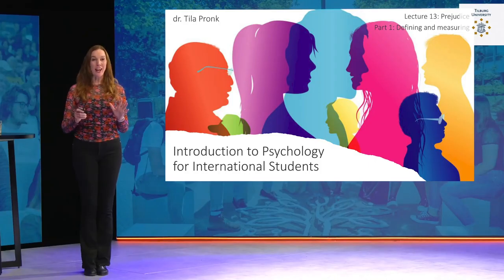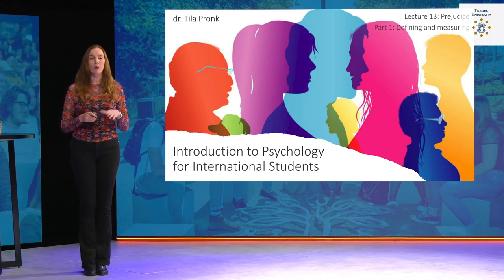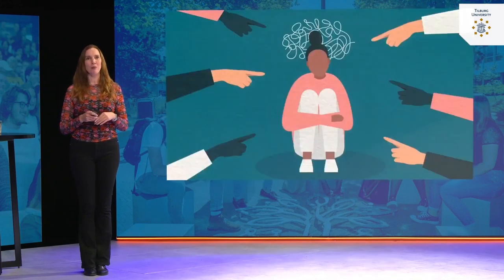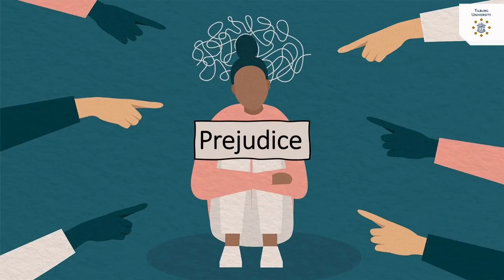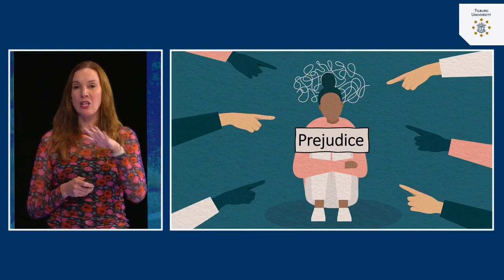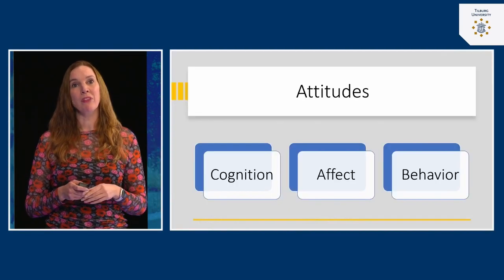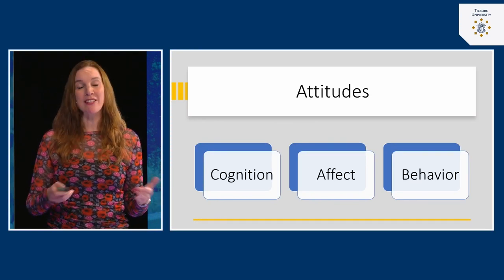This is lecture 13, and in this final lecture of the course we're going to discuss one of the most harmful and at times infuriating social psychological phenomena: prejudice. We will start in this first part by talking about the definition of prejudice and also how we can measure prejudice in people. Prejudice is considered a negative or sometimes even hostile attitude towards people in a distinguishable group, only based on their group membership.